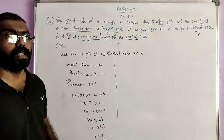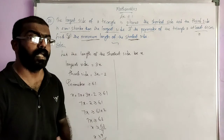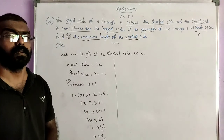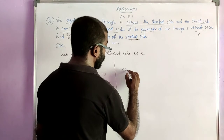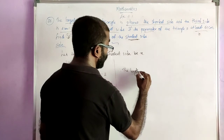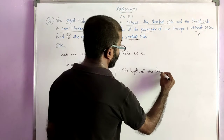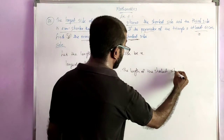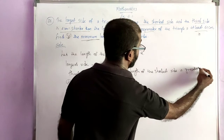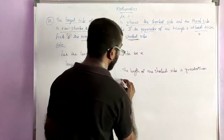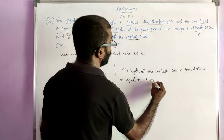That means the length of the shortest side is 9 or more than 9. Therefore, the length of the shortest side is greater than or equal to 9 cm.